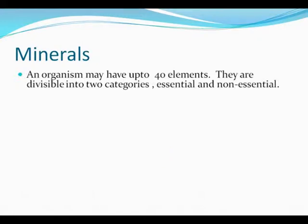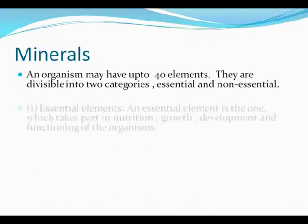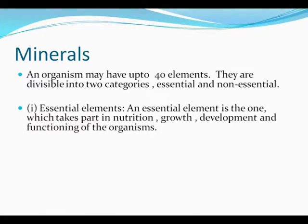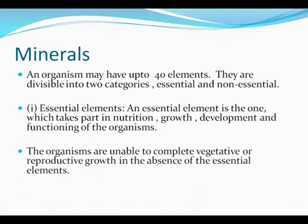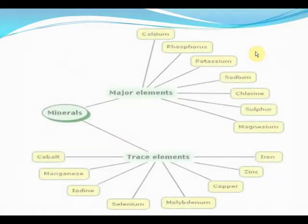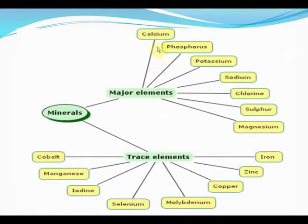An organism may have up to 40 elements, divisible into two categories: essential and non-essential. Essential elements are those which take part in nutrition, growth and development, and the functioning of organisms. Organisms are unable to complete vegetative or reproductive growth in the absence of essential elements.